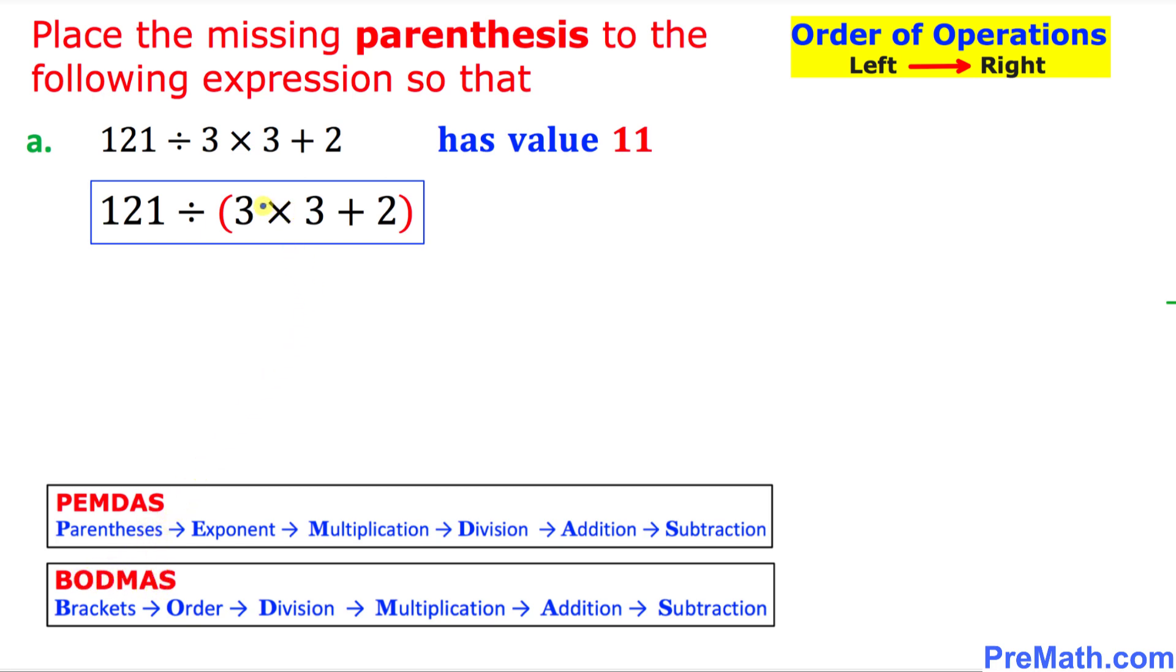So if we look at this thing within this parentheses we will be taking care of this multiplication first. 3 times 3 is 9 so this simply becomes 121 divided by, still we have a parentheses, 9 plus 2 so 121 divided by, let's add them first, 11. 121 divided by 11 is 11 that tells us that we have got the correct value.